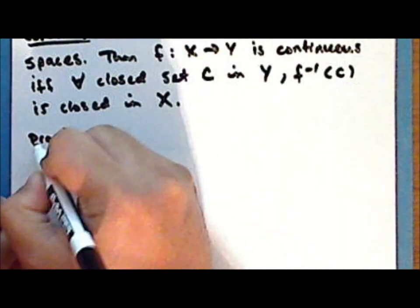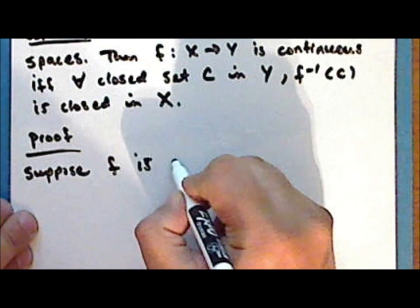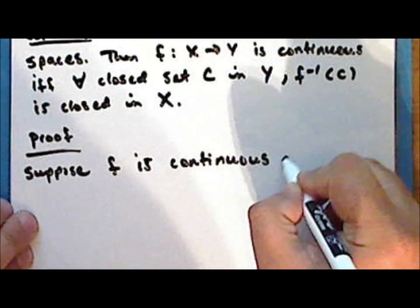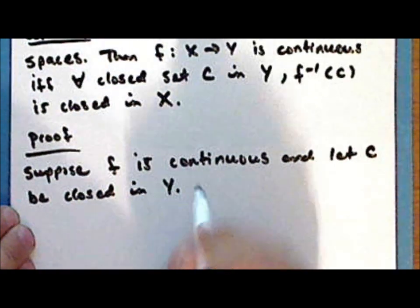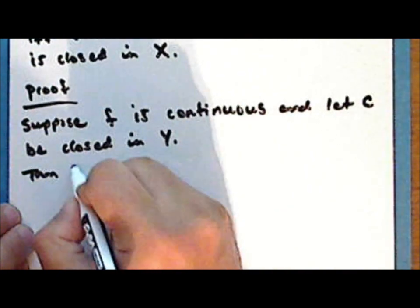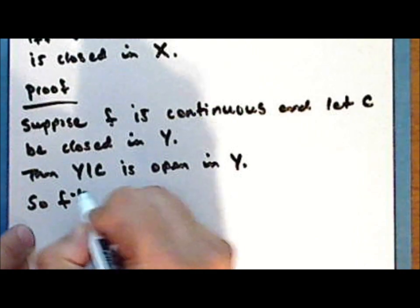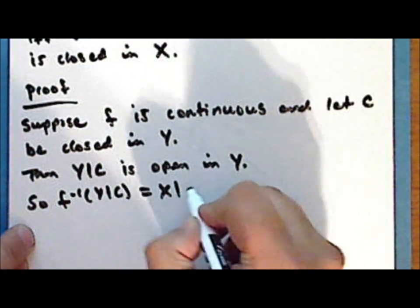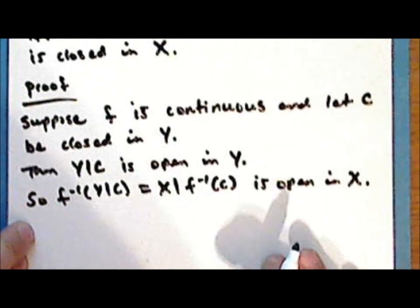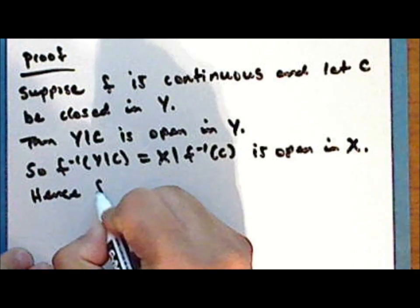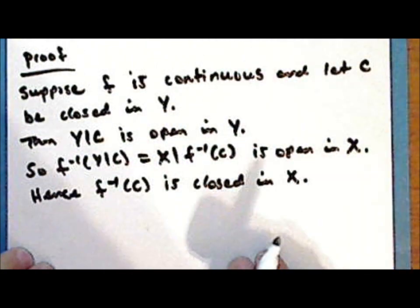Proof. Suppose that the function f is continuous, and let the set c be closed in the range space y. Then the complement of c in y is open in the space y, and so the inverse image of the complement of c in y — which is the complement of the inverse image of c in x — is open in the space x, as the function f is continuous. And hence the inverse image of the set c is closed in the domain space x.